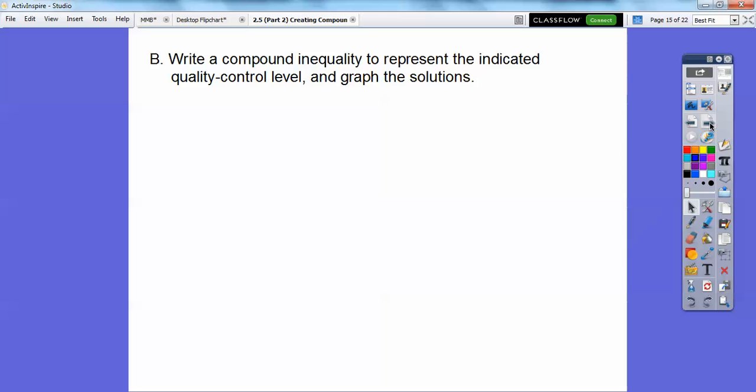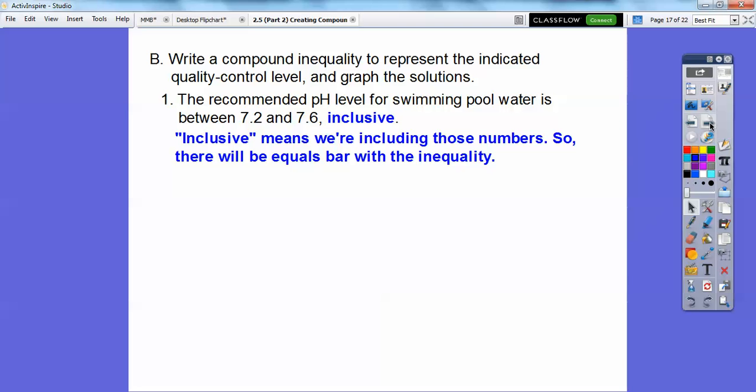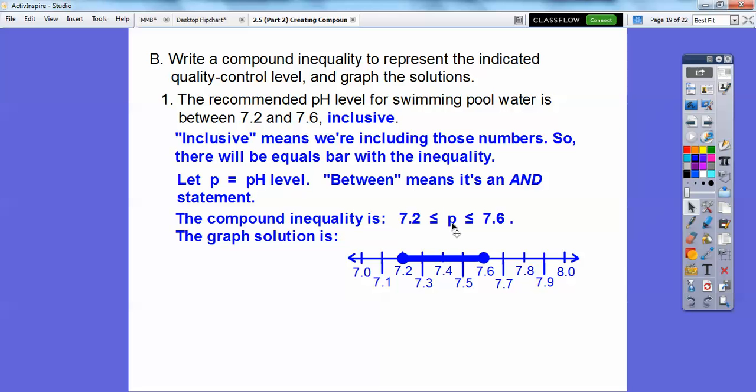This is pretty easy, you guys. These are pretty much all AND statements. So, the recommended pH level for swimming pool water is between 7.2 and 7.6 inclusive. Inclusive means, you guys, that we are including those numbers. So, when you're including those numbers, there's going to be an equals bar underneath the inequality. And you're going to have closed circles on these. So, let P be the pH level, and between means it's going to be an AND statement. So, here it is right here. Our P is going to be between 7.2 and 7.6. Notice the inequality is pointing towards the left, and we have the equals bar because the word inclusive right there. And so, there it is right there, 7.2, 7.6, and shaded in between the two right there. I couldn't fit those 7.1s right there. They just got all crammed together, so I had every other one drop that down, but you get the picture.